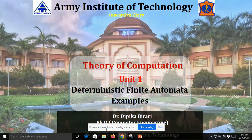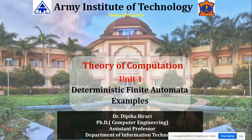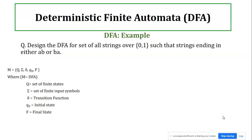Welcome to the lecture series of Theory of Computation. Today we are going to see another example of deterministic finite automata. We have to design a DFA for the set of all strings over the binary alphabet such that strings are ending in either 'ab' or 'ba'. We have already gone through categories like ending with, starting with, and substring.